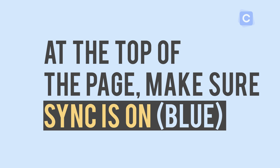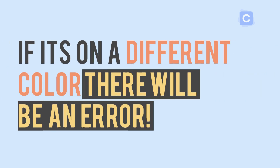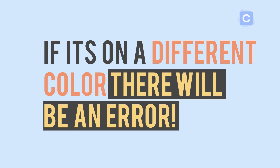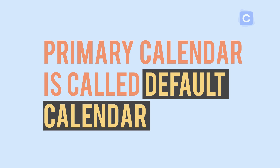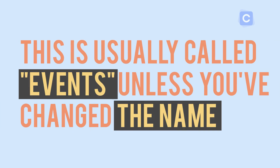You'll notice at the top of the page on your Android calendar it says 'Sync' — make sure this is turned on and showing blue. If it's on red or something different, there's typically an error. Keep in mind that you will not use your primary calendar or your 'Other' calendar. The primary calendar is usually called 'Default Events' unless you've changed it — that's a tricky thing to note.